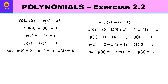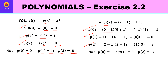For the third polynomial p(x) = x³: p(0) = 0³ = 0, p(1) = 1³ = 1, p(2) = 2³ = 8. For the fourth polynomial p(x) = (x-1)(x+1): p(0) = (-1)(1) = -1; p(1) = (0)(2) = 0; p(2) = (1)(3) = 3. These are the values at x=0, 1, and 2.